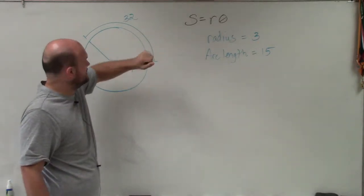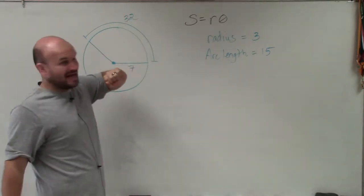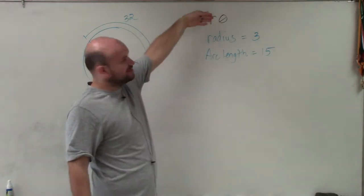Again, radius is going to be represented by r, and arc length is represented by s. So in this case, we need to actually determine what theta is.